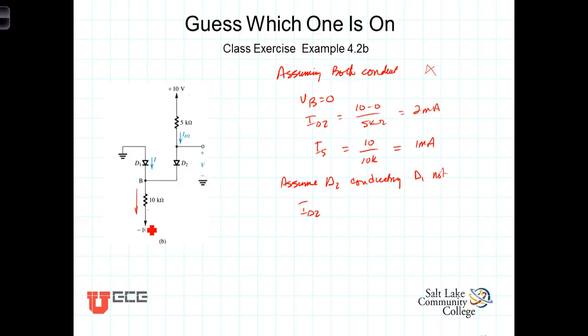So, ID2 would equal, let's see, what would it be? Coming across here, 10 to minus 10, it would be 20 volts, divided by the 15 kiloohms, like we had before, that would be 4 thirds of a milliamp.